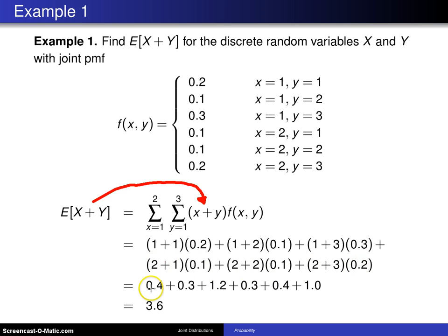When you calculate those six values, they turn out to be these, they add to 3.6. So the expected value of x plus y for this particular discrete joint probability mass function is 3.6.